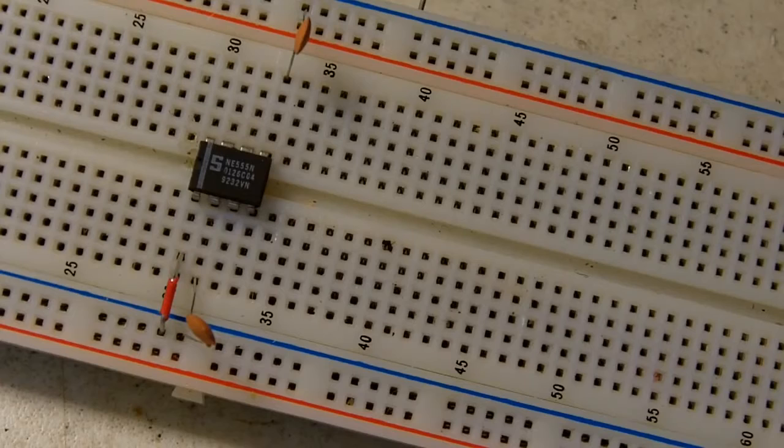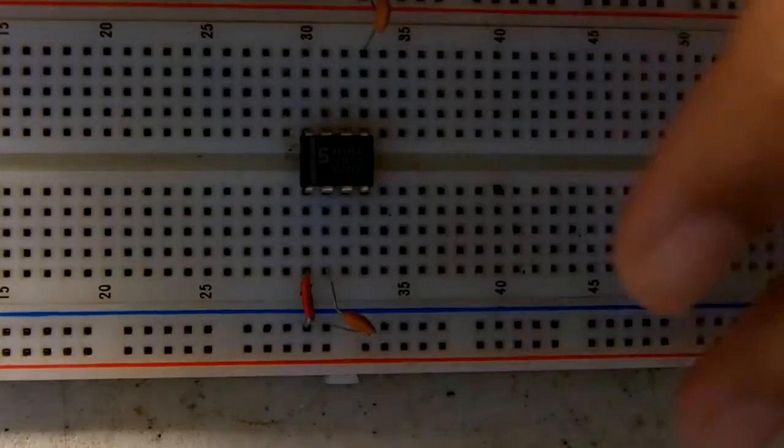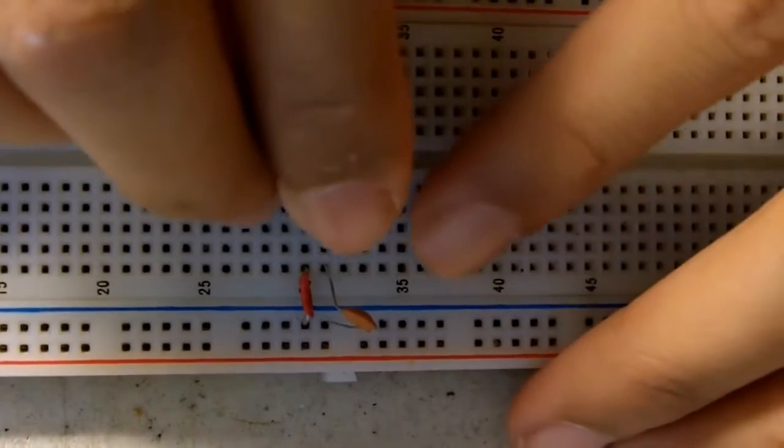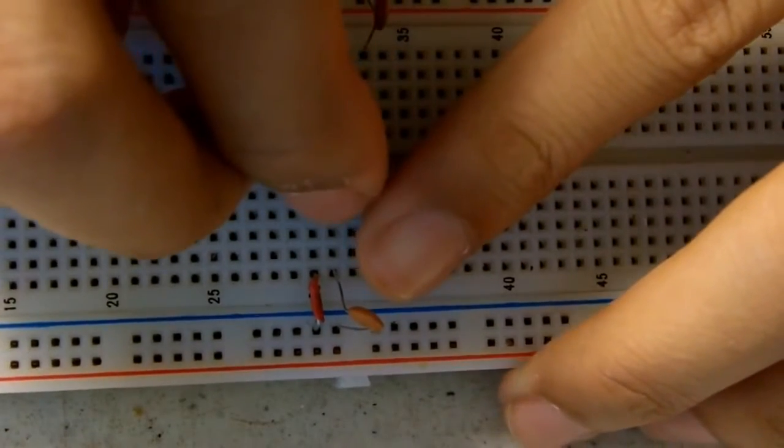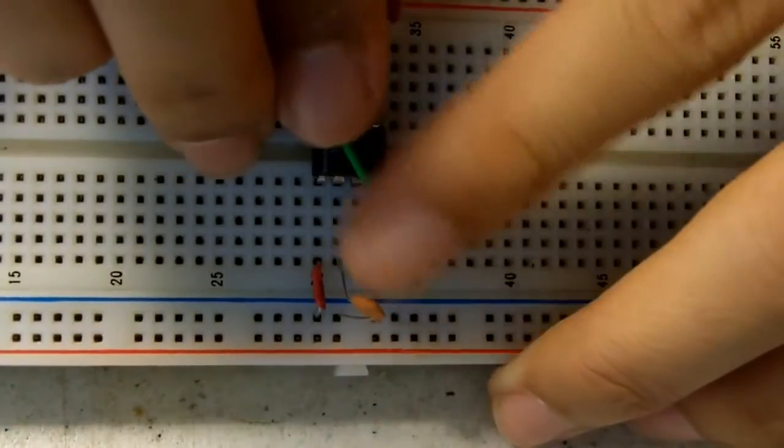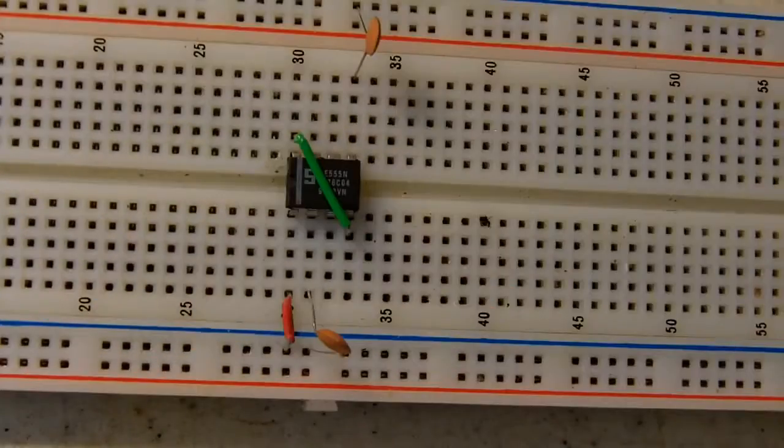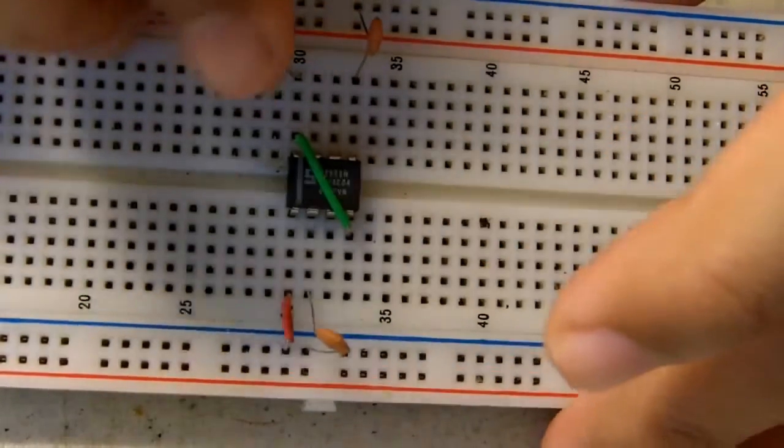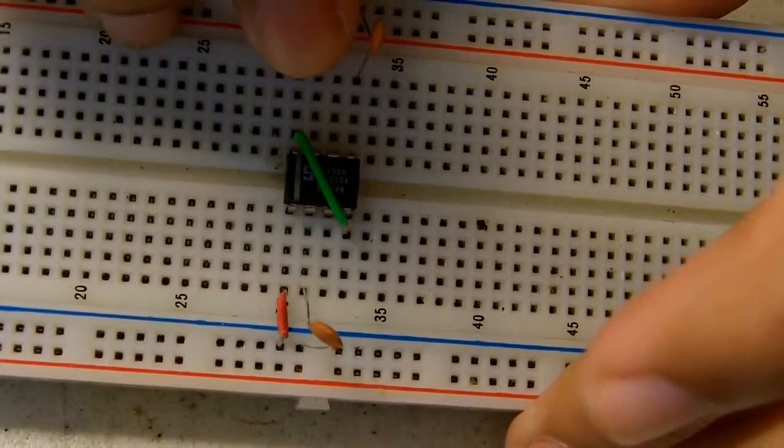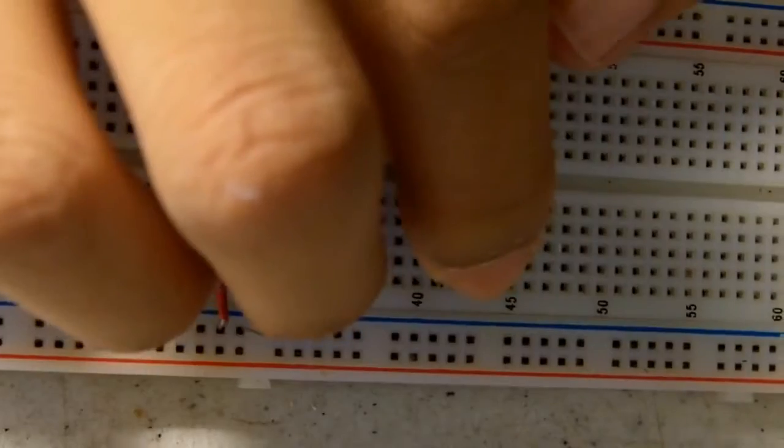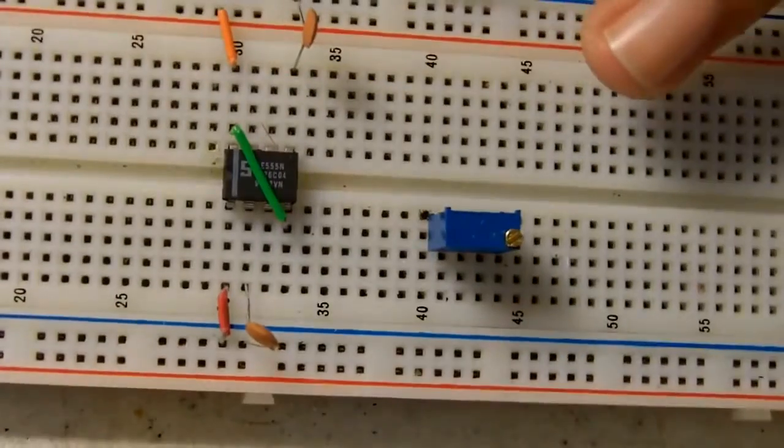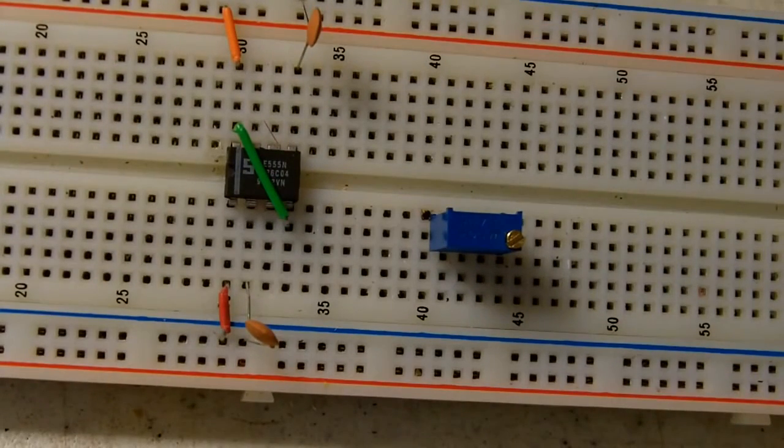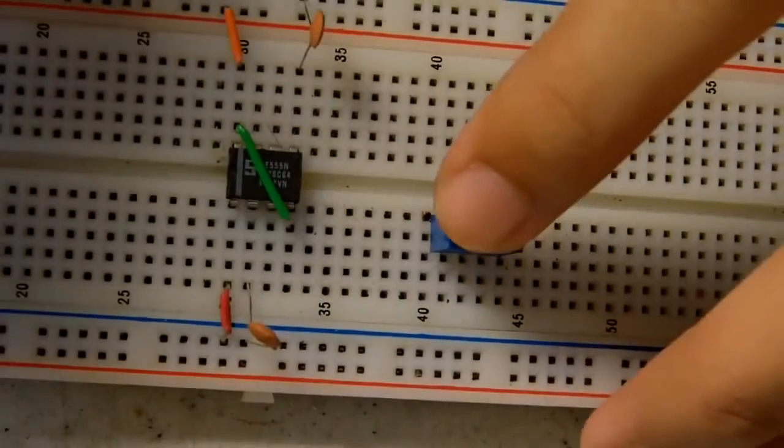Pin four connected to pin eight, connected to positive. Pin two connected to the middle of the potentiometer.